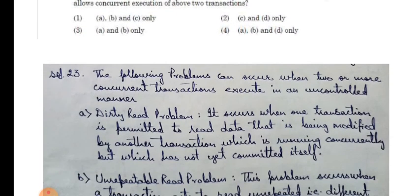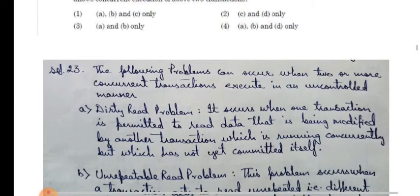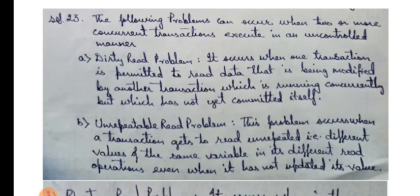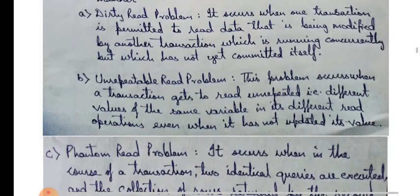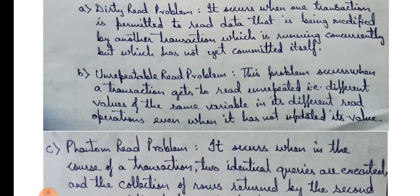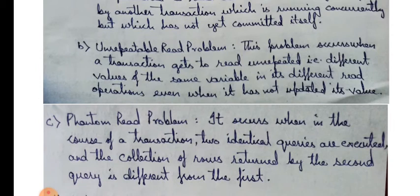The following problems can occur when two or more concurrent transactions execute in an uncontrolled manner. Number 1, dirty read problem. It occurs when transaction is permitted to read data that is being modified by another transaction which is running concurrently but which has not yet committed itself. Unrepeatable read problem. This problem occurs when a transaction gets to read unrepeated, that is different values of the same variable in its different read operations, even when it has not updated its value.